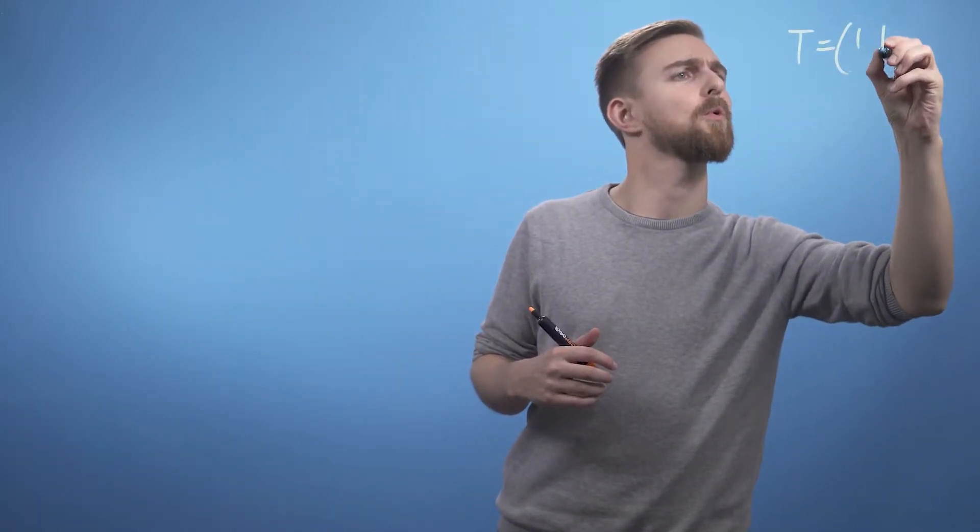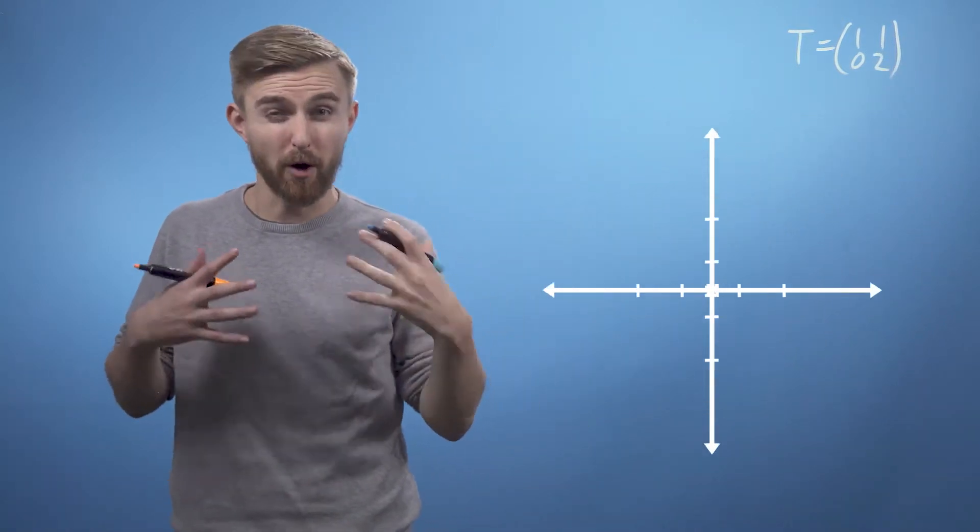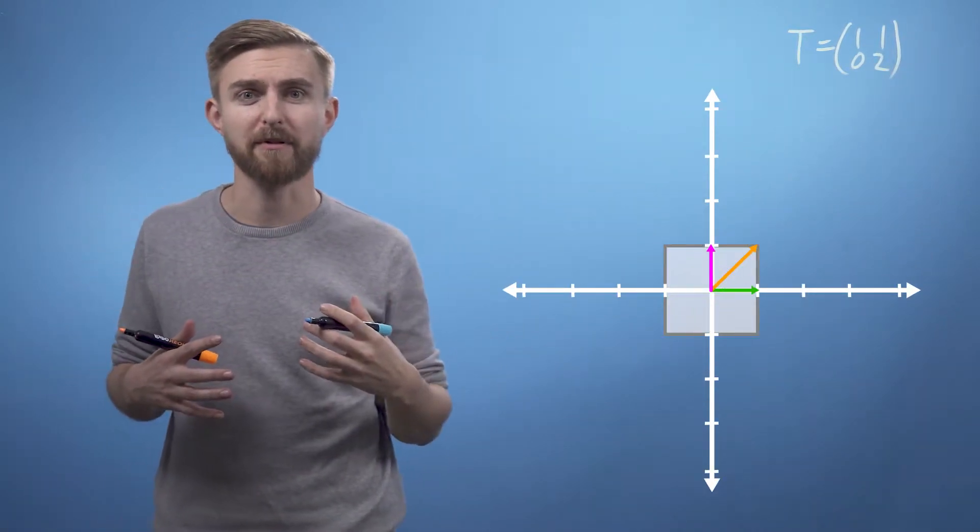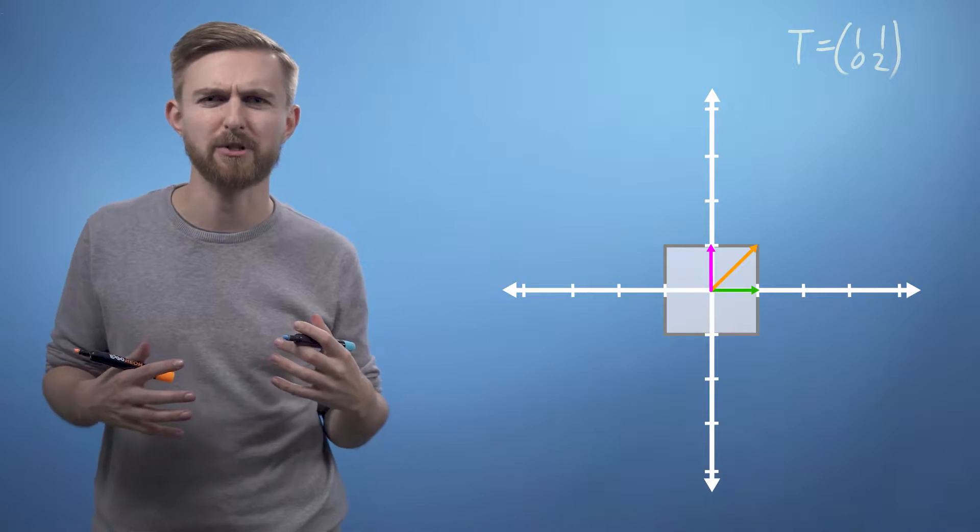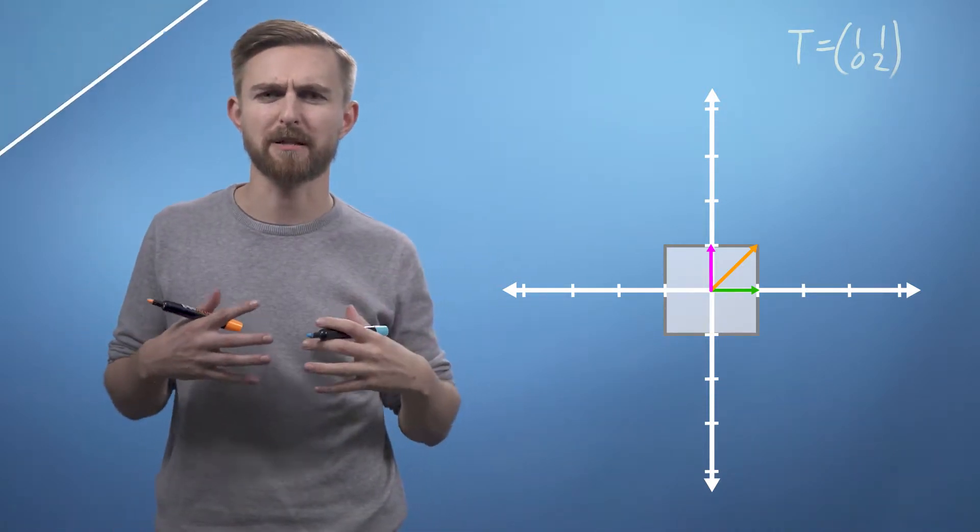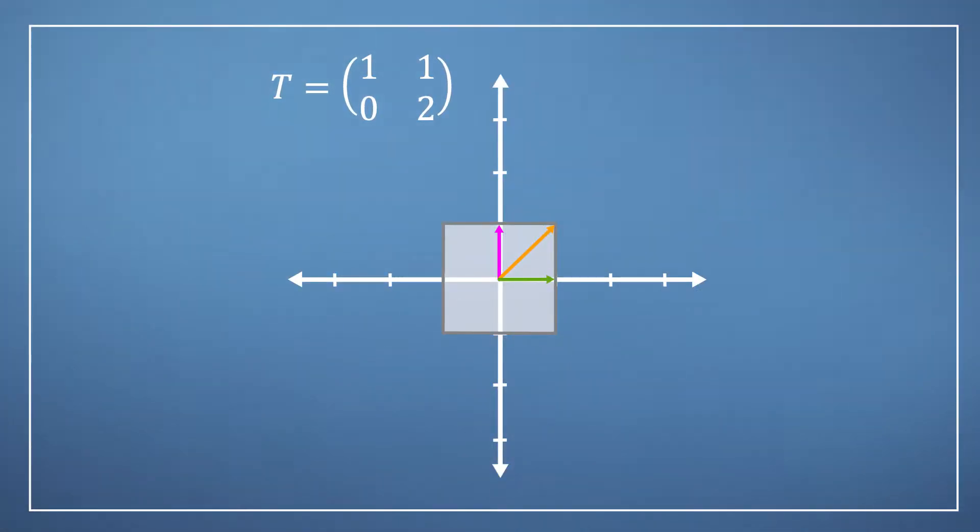Consider the transformation matrix T equals (1, 1; 0, 2). Hopefully you'd feel fairly comfortable at this point in drawing the transformed square and vectors. As the first column is (1, 0), this means our i-hat vector will be unchanged. However, the second column tells us that j-hat, the second vector,